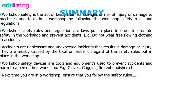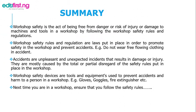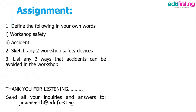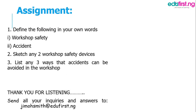In this video we've been able to talk about workshop safety, and we've looked at the workshop safety rules and regulations. We've looked at accidents, ways to prevent accidents, and examples of accidents. We've talked about workshop safety devices and tools. A word of advice: next time you're in a workshop, ensure that you follow the safety rules that have been set in place. For the assignment, define the following in your own words: workshop safety and accident. Sketch any two workshop safety devices — either the ones in this video or any that you think were left out — and list any three ways that accidents can be avoided in the workshop. Thank you so much for listening.